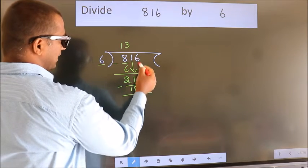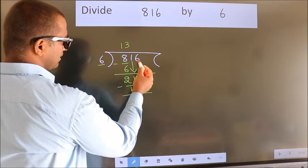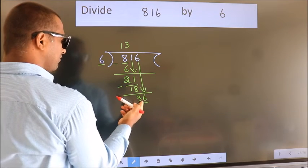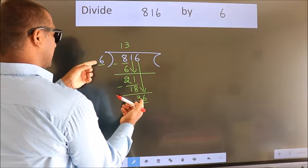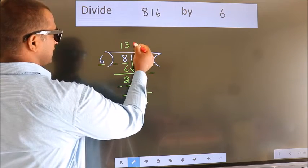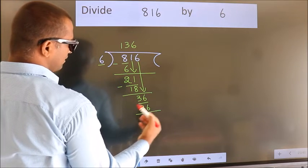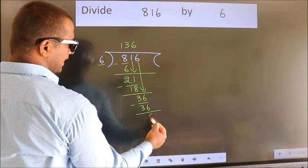After this, bring down the beside number. So 6 down. So 36. When do we get 36 in 6 table? 6 6 36. Now we subtract. We get 0.